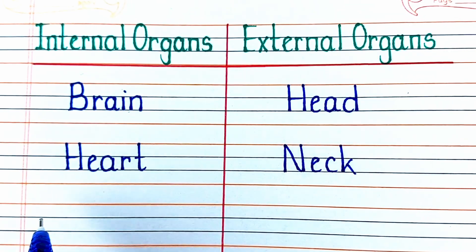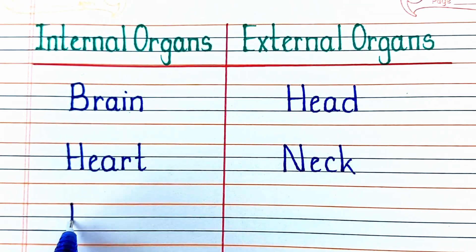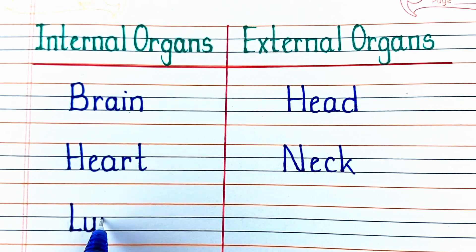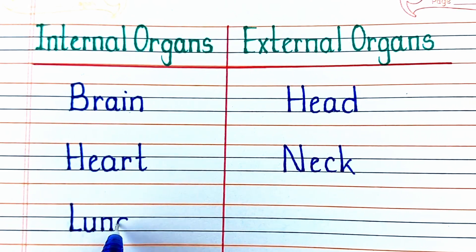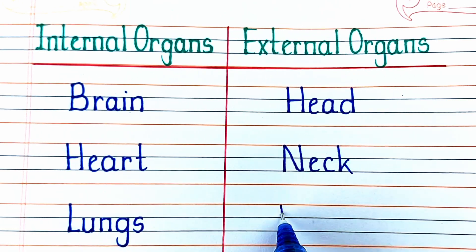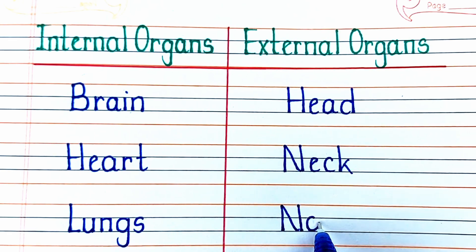The first internal organ in our list is the most important organ that controls us — that is our brain. The external organ that encapsulates the brain is our head.